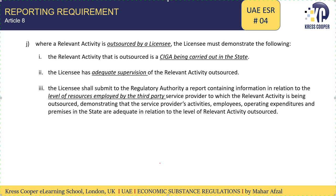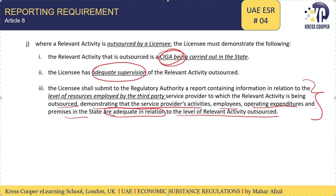Moreover, whenever a relevant activity is being outsourced by the licensee to a third party, the licensee will be required to prove that the CIGA is being carried out in the UAE, that adequate supervision is being done by the licensee, and that the third party has sufficient resources — including operating expenditure and premises — to carry out the core income generating activities on behalf of the licensee in the UAE.